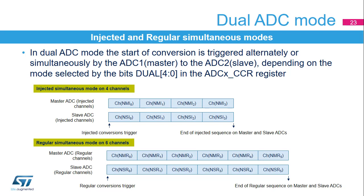This slide describes the injected simultaneous mode and the regular simultaneous mode. The trigger is used to simultaneously start the sequence of conversions on both master and slave ADC. Conversion sequences must be equal on master and slave or must ensure that the interval between triggers is longer than both sequences. In discontinuous mode, every simultaneous conversion requires an injected trigger.